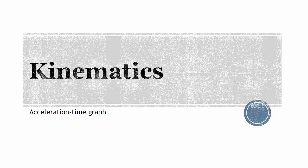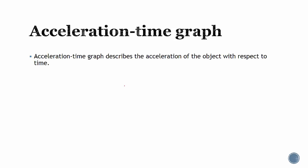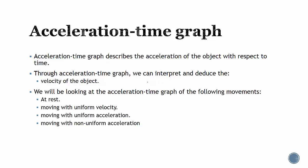For this lesson we will be talking about acceleration-time graphs. The learning objectives are mainly to look at the shape of the acceleration-time graph when a body is moving with uniform acceleration and non-uniform acceleration. Acceleration-time graphs describe the acceleration of an object with respect to time, and through them we can interpret and deduce the velocity of the object. We'll be looking at the acceleration-time graph for the following movements: at rest, moving with uniform velocity, moving with uniform acceleration, and moving with non-uniform acceleration.